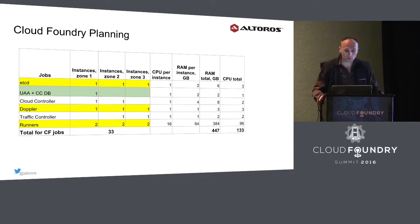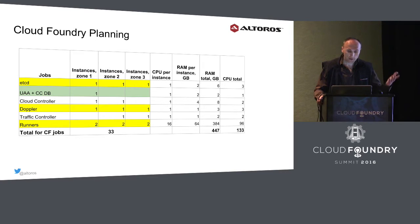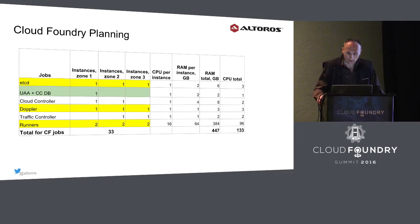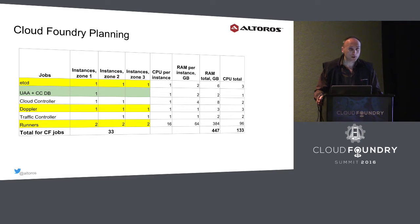We also have totals for each of the three availability zones, as well as the total number of memory and CPU. The cells highlighted in yellow are the Cloud Foundry jobs that we recommend to place in three availability zones.